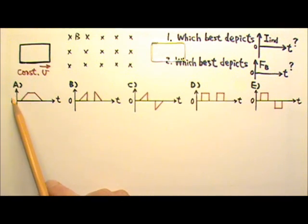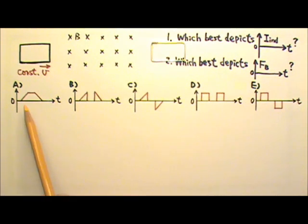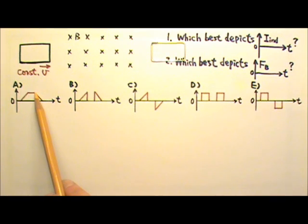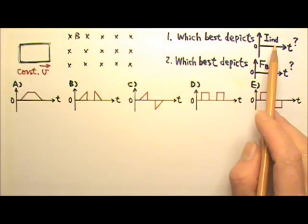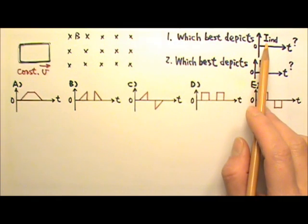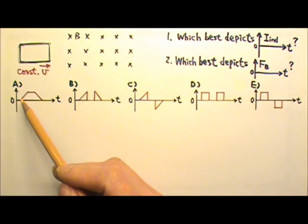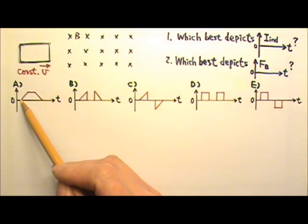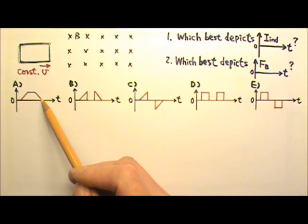This graph depicts the magnetic flux through the loop: at first it's zero, then it increases as the loop enters the field, then constant flux while the entire loop is inside, then the flux decreases as the loop exits. We only have induced current when the flux changes, which means we only have induced current while the loop is entering the field and while it's leaving the field.